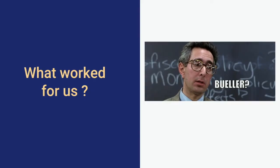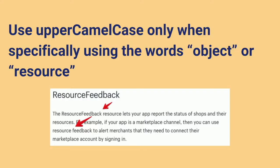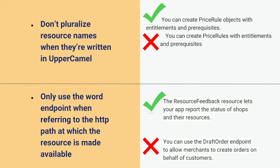So after all of this additional complexity I hadn't counted on, did anything work for us? Well, we did come up with some rules I was kind of happy about. We did use upper camel case, but we decided to only use it if we were specifically talking about resources or objects. If we were discussing the business case that these things enabled, we'd do away with that and simply use sentence case — a lot less cluttered, a lot more readable. We didn't pluralize resource names when they were written in upper camel case. Instead, we used a convention where we'd talk about 'resources' or 'objects' and pluralize those.